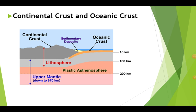Now our second topic is oceanic crust. What is oceanic crust? Oceanic crust is the uppermost layer of the oceanic portion of the tectonic plates. It is composed of the upper oceanic crust with pillow lavas and sheeted dyke complex, and the lower oceanic crust composed of troctolite, gabbro, and ultramafic cumulates.